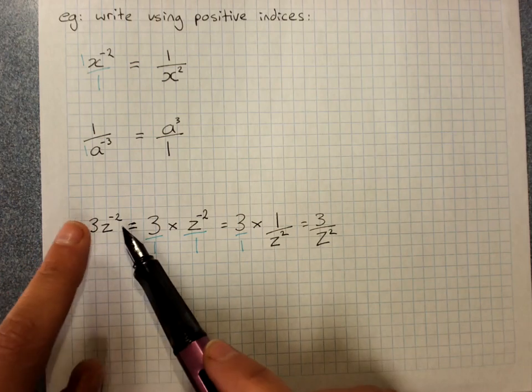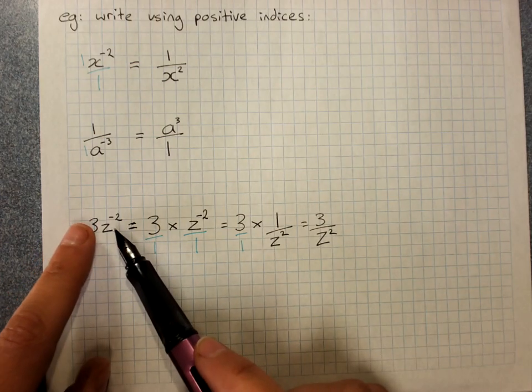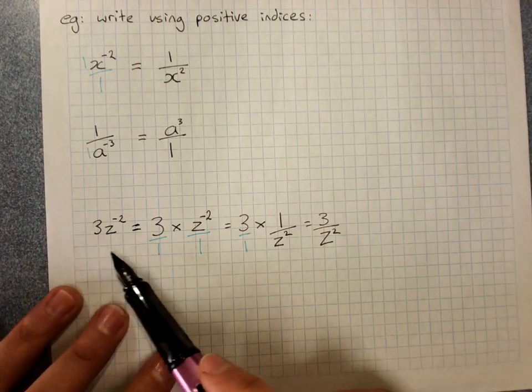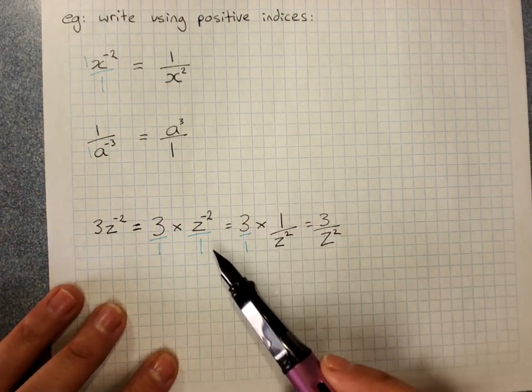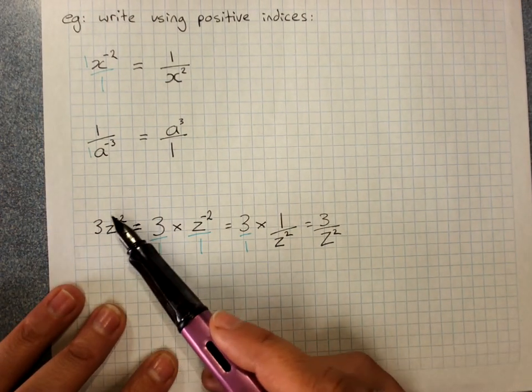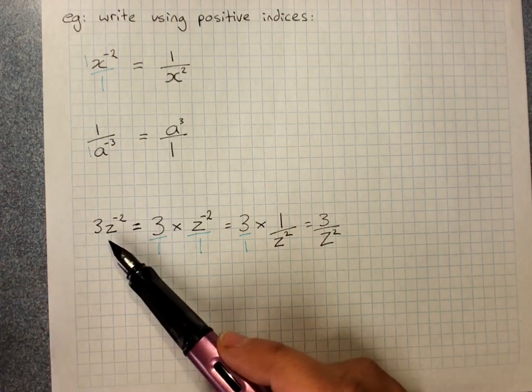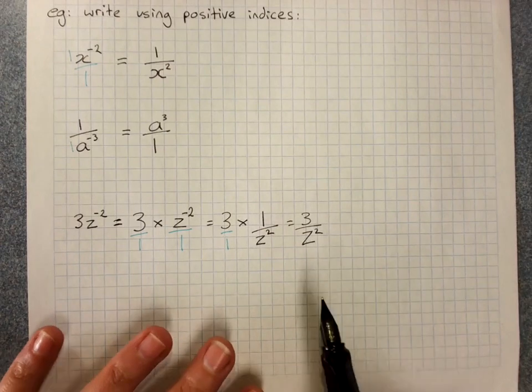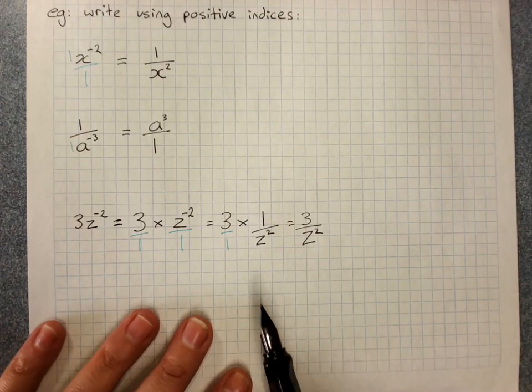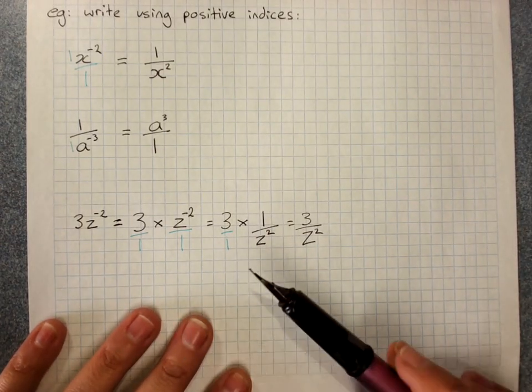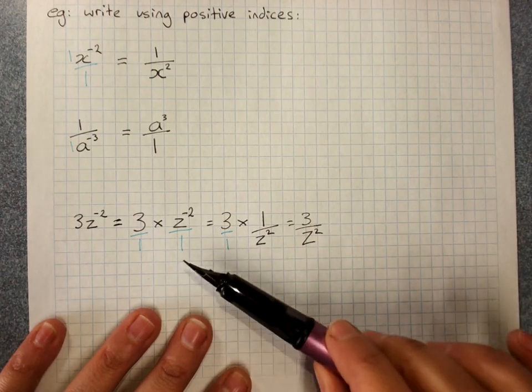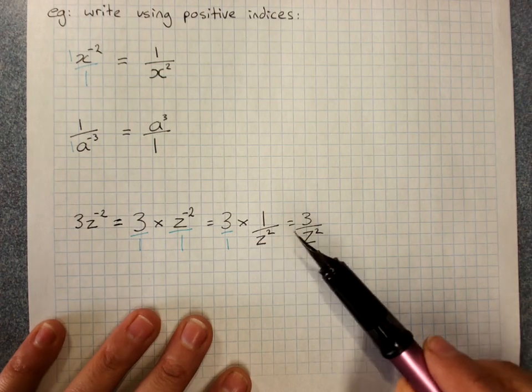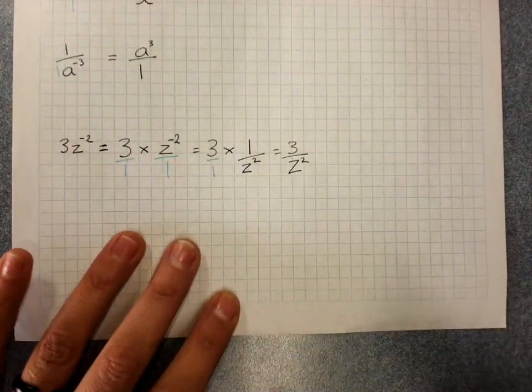This is not 1 over 3z squared. The only thing that gets taken as a positive reciprocal is the negative index itself. This is where you're most likely to mess up: many people are going to come away with the idea that any negative can be moved up and down in a fraction by taking away the negative. It can't.